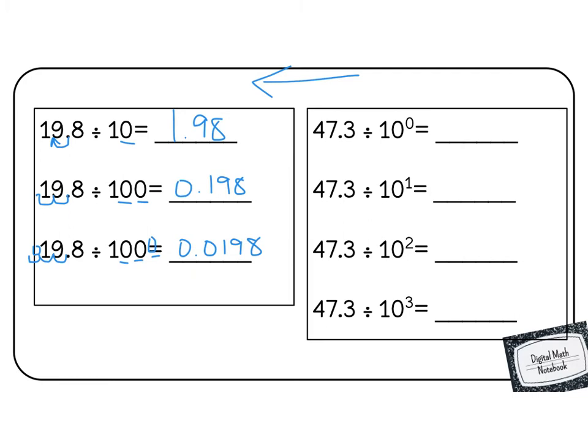Now we can do this same type of pattern with exponents. We practice this with multiplying. Let's see what it looks like with division. We know that 10 to the power of 0 has 0 zeros, so that would be the number 1. And if we divide by 1, everything stays the same, so that would be 47.3. Nothing changes.